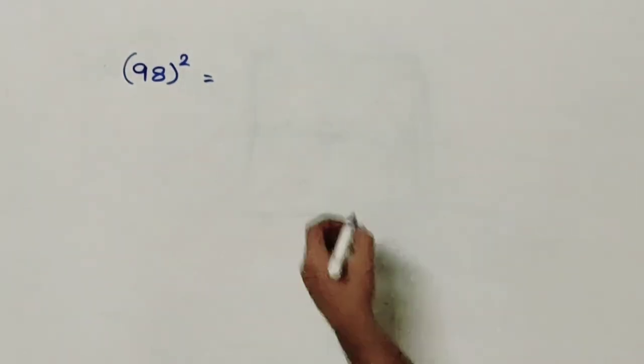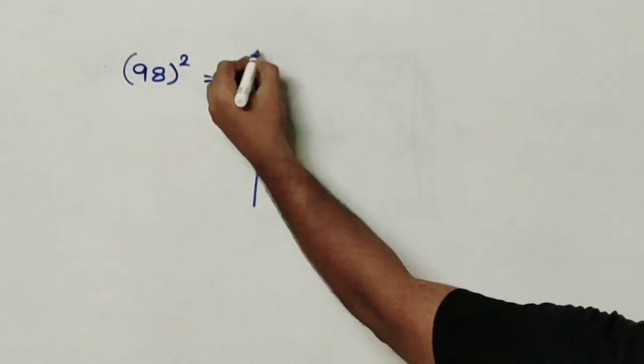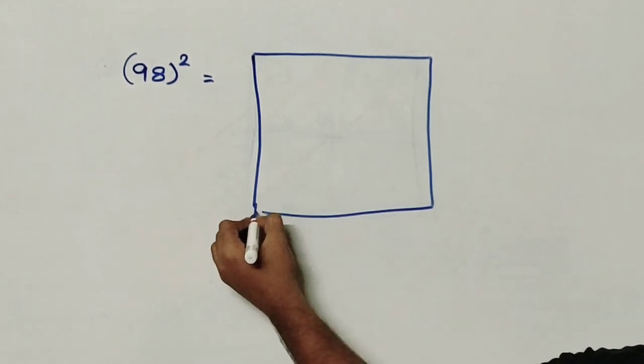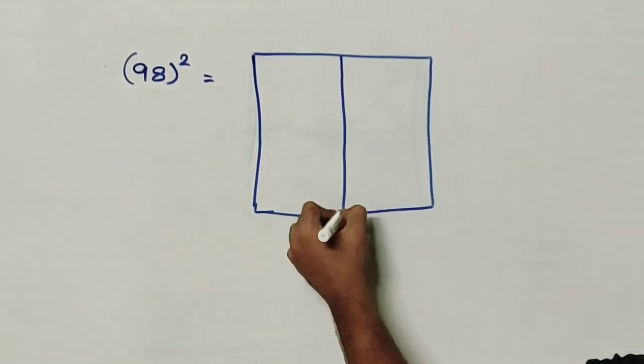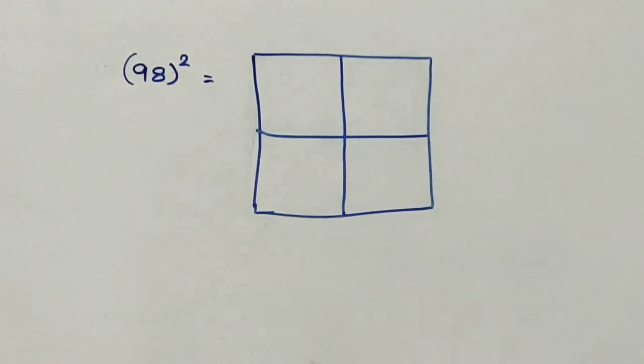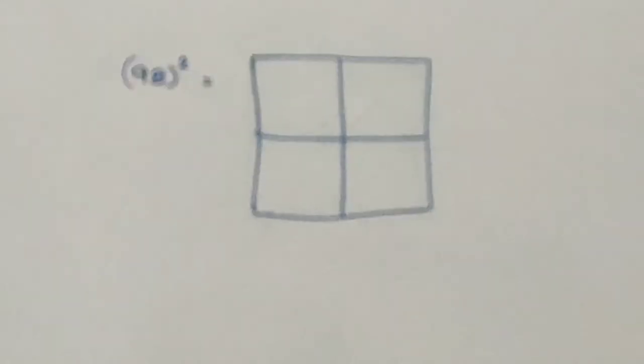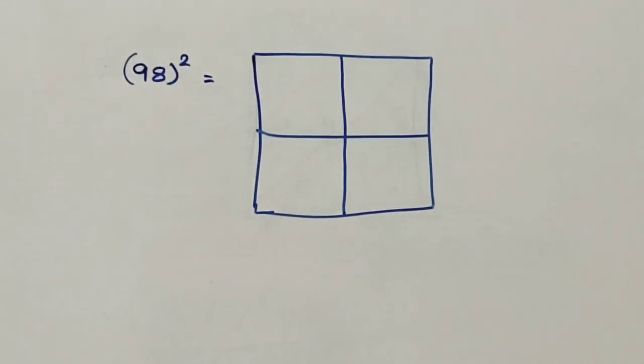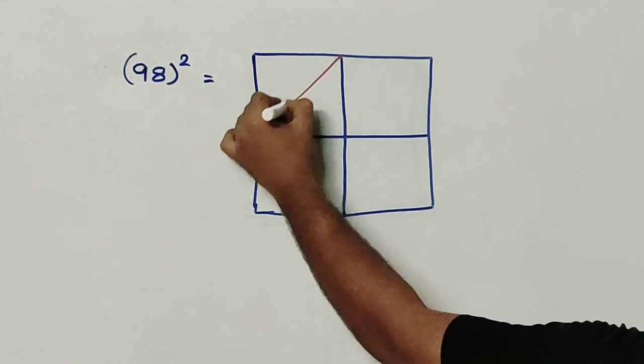So first I will form again a square. I will divide it into 2 by 2 blocks. So this forms 4 small squares. Again I will form a diagonal to it.